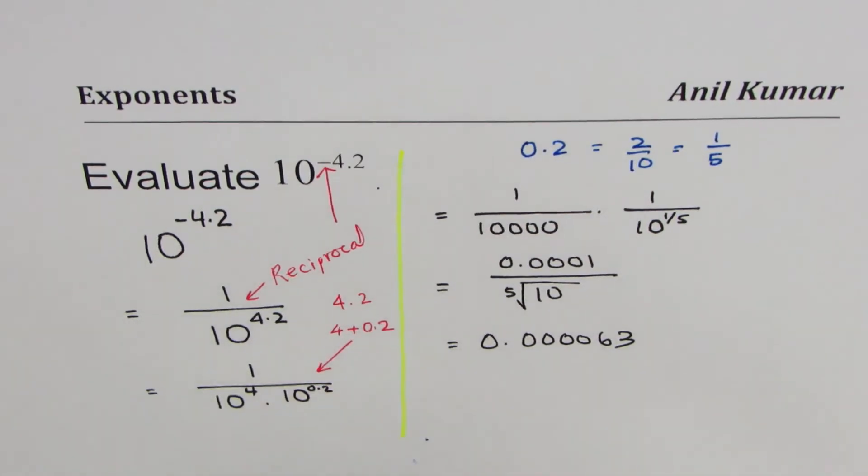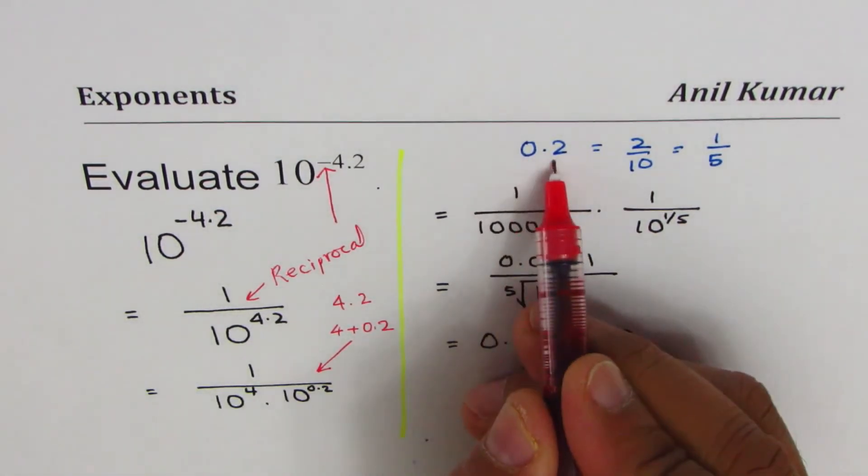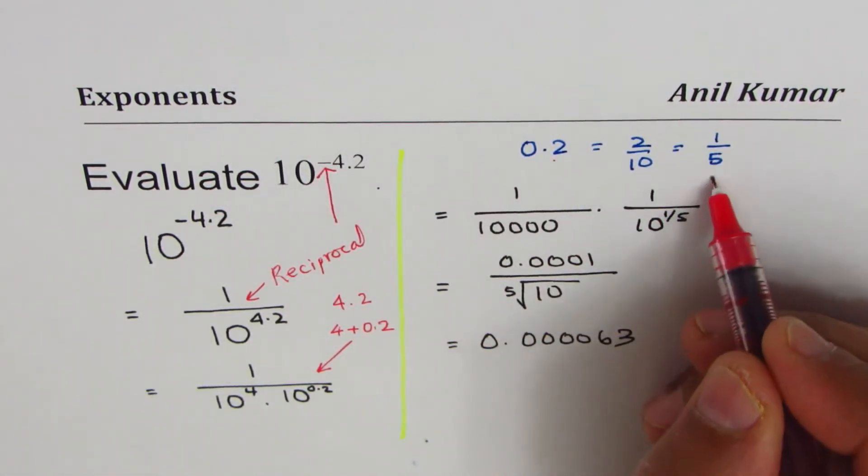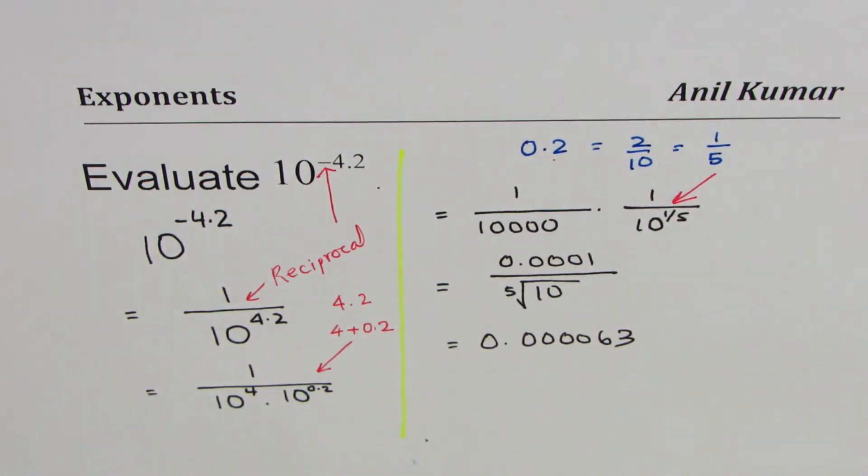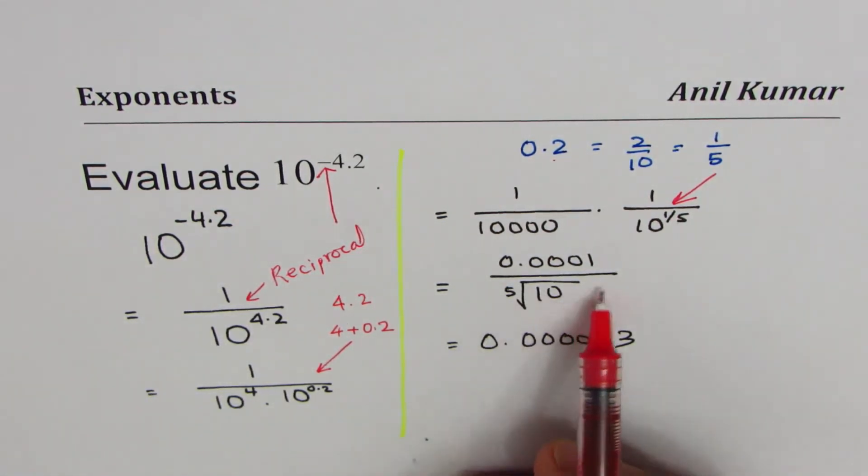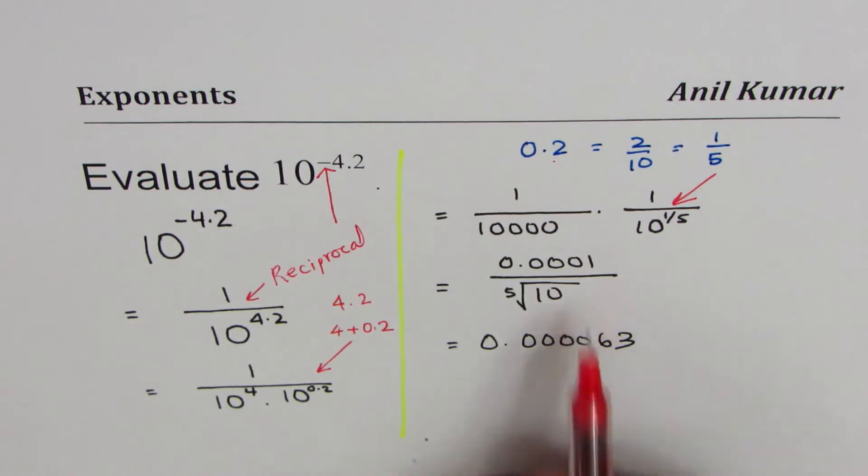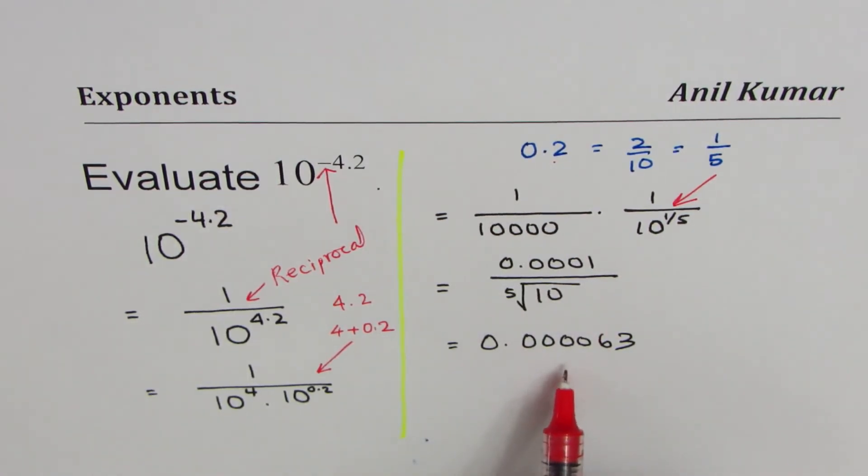And then 0.2 means 1 over 5, so we made it 1 over 5. So that is the answer which you could do without calculator, and using calculator this is what you can get.